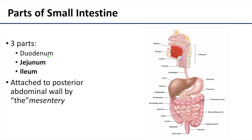There are three parts of the small intestine. The most proximal portion is the duodenum — it's also the shortest part — as well as the jejunum and the ileum, and that's what we're going to be focusing on in this particular presentation.